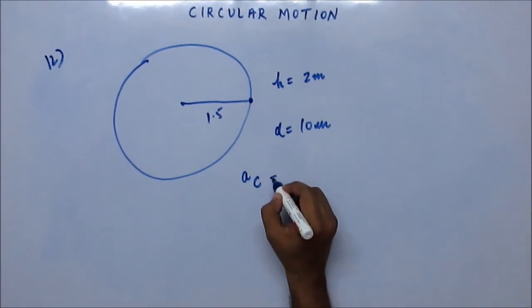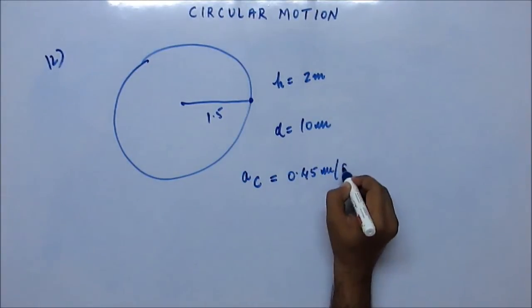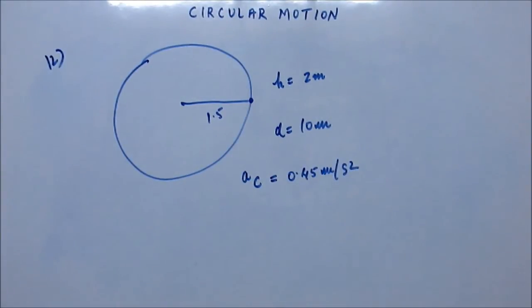The answer to this would be that centripetal acceleration will come out as 0.45 meter per second square. The calculation might not have been very easy, but you know, the calculations are not always very easy. Nevertheless, the acceleration is 0.45 meter per second square. Let's see how we are going to get this.